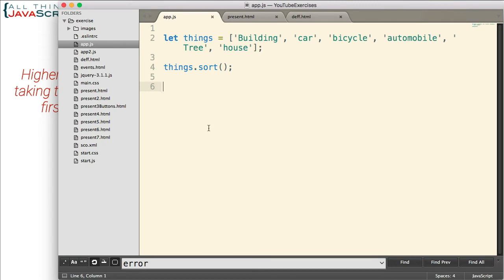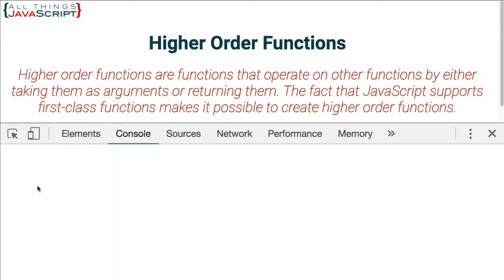Here we have an array. It contains things: building, car, bicycle, automobile, tree, house. And then we are doing a sort on that array. Now, looking at the items in that array, will this sort correctly? Well, let's go ahead and find out. Let me open the console and I'll just display the things array.